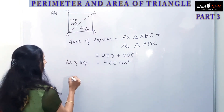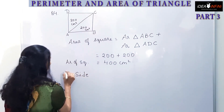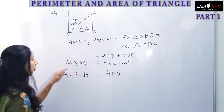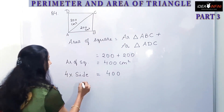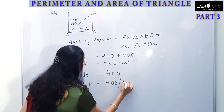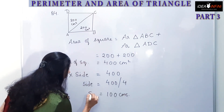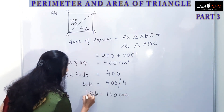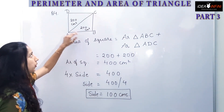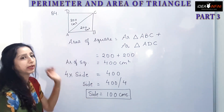Since the area of a square is side into side, we equate side squared to 400. So side equals the square root of 400, which is 20 centimeters. This is the side of the square formed when two triangles of area 200 centimeters square each are combined.